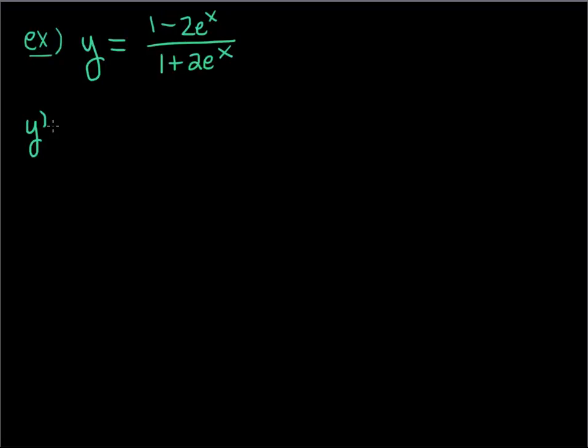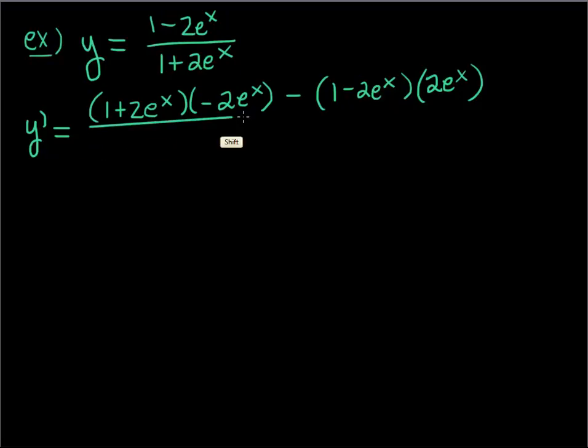So y' is down d up—the derivative of the top, the one goes away and I just get -2e^x—minus up d down. So the derivative of the bottom, the one goes away and again the derivative of 2e^x is just 2e^x. That's the lovely thing about e. All over down down.